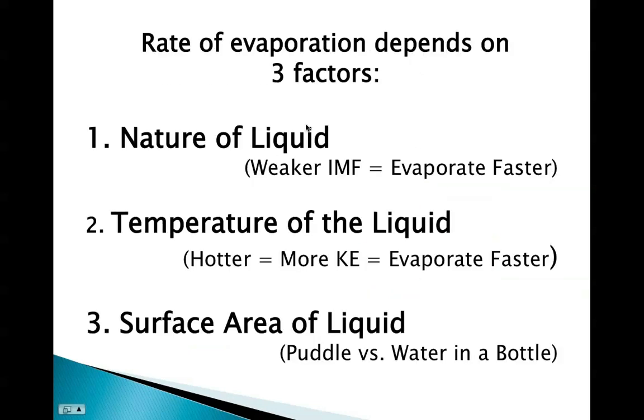The rate of evaporation depends on three factors. The nature of the liquid—weaker IMFs between particles means it will evaporate faster. The temperature of the liquid—if it's hotter, there's more kinetic energy. They can evaporate faster, also more potential energy during the actual phase change. And also the surface area of the liquid.